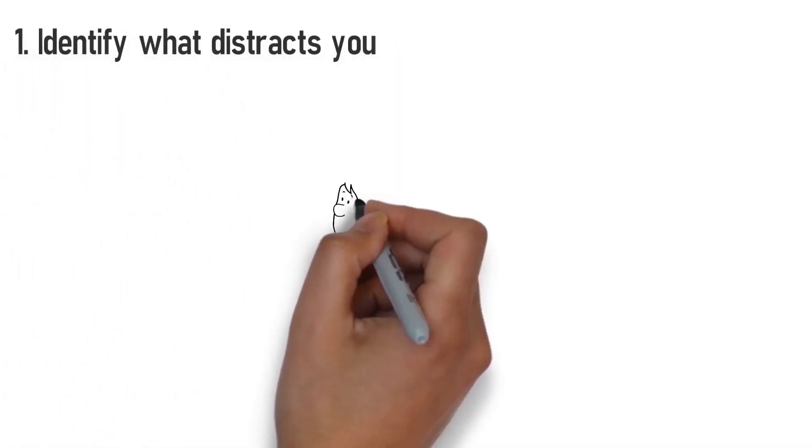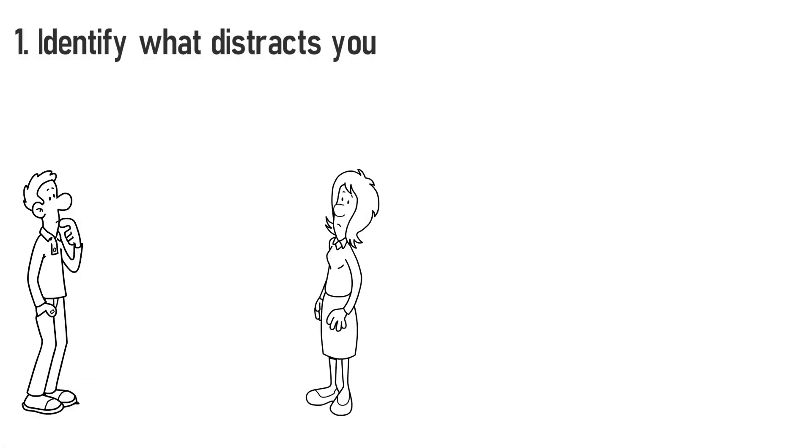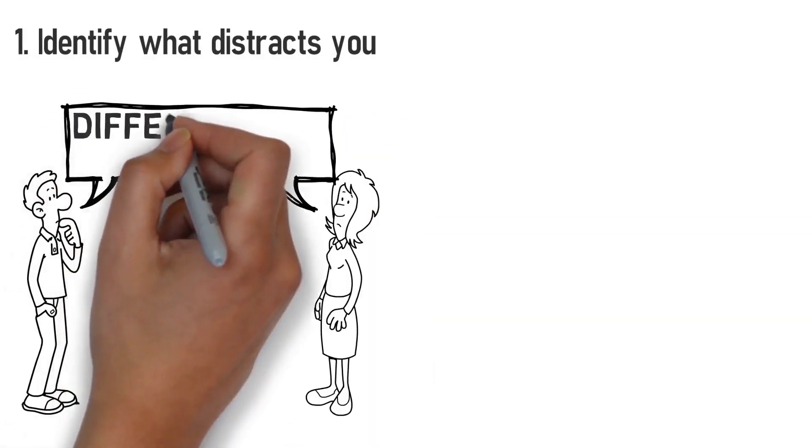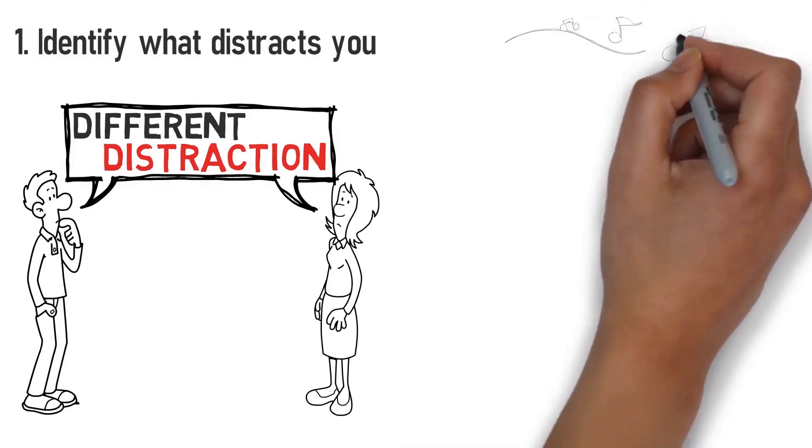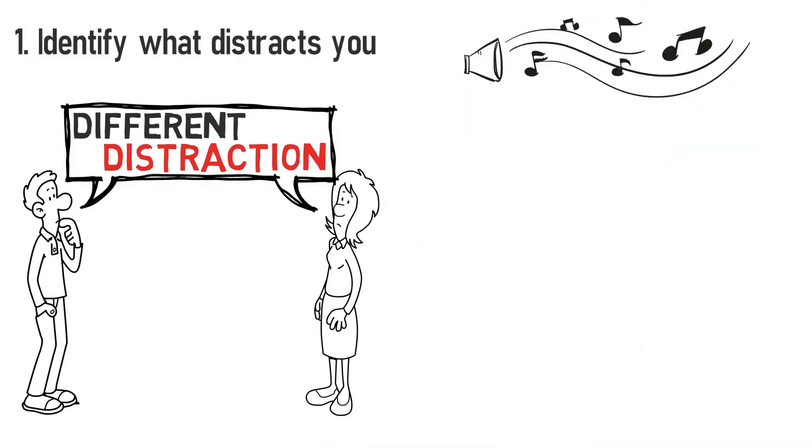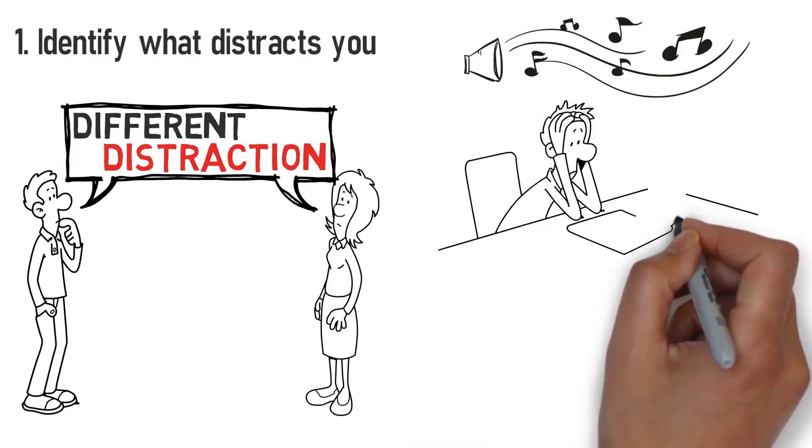First, identify what distracts you. Getting distracted will keep you from studying effectively. But what distracts you in particular is different from somebody else with ADHD. I study best with instrumental music that tunes out all other noise, an empty desk, a white wall, and just the essential things that I need to study.